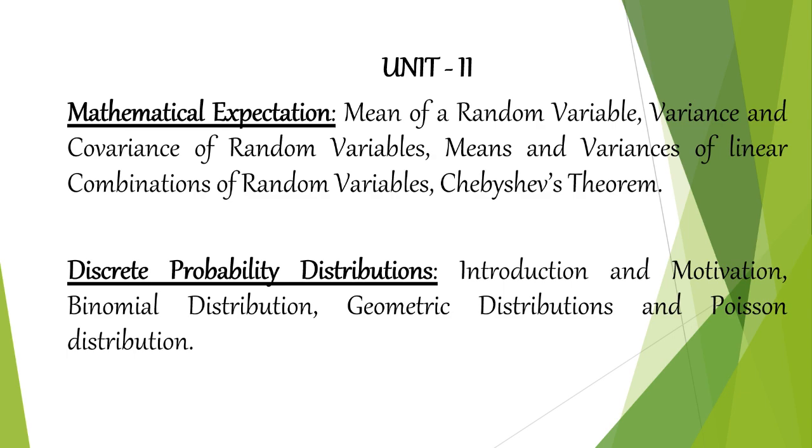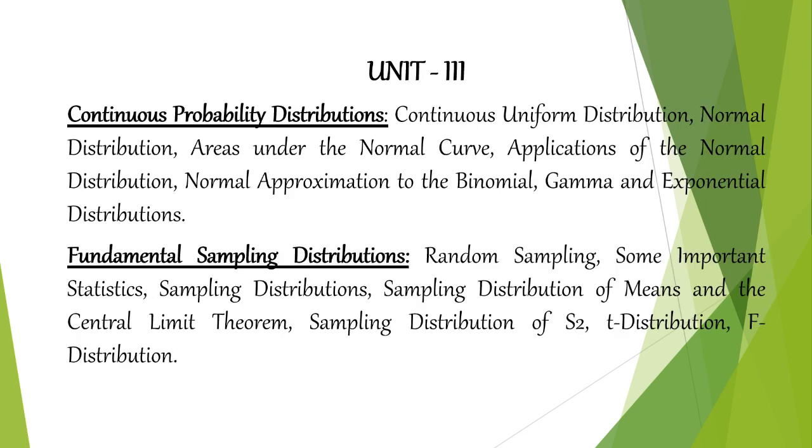And in unit 3, we have continuous probability distributions. We have uniform distribution and a normal distribution. We have the famous curve. I think in intermediate itself, you would have studied this curve, this famous bell-shaped curve. In the middle, you have mean and right side and left side, you have the variances. Middle line will be the mean of the normal distribution.